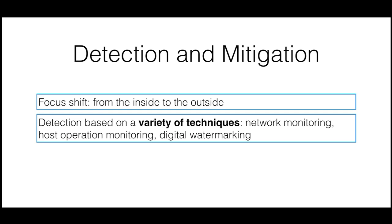A large spectrum of techniques can be applied when detecting data exfiltration. Network monitoring and host operation monitoring can identify anomalous data flow or hosts performing suspicious operations, like frequent encryption and compression of data. Digital watermarking can, for example, help in tracking data for forensic reasons.